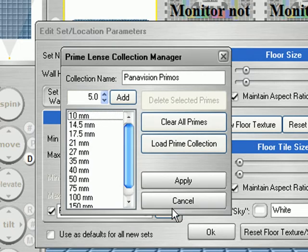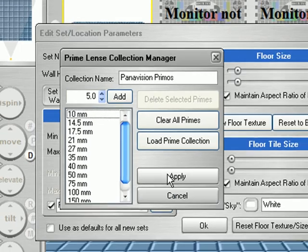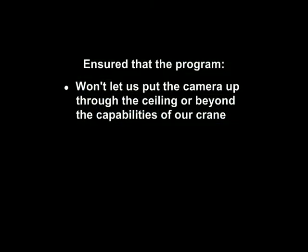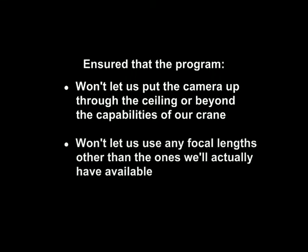We can select from any of the standard lens collections or edit and build our own. Once we're satisfied, simply click Apply. What we've just done has ensured that the program won't let us put the camera up through the ceiling or beyond the capacities of our crane, and won't let us use any focal lengths other than the ones we'll actually have available. With all that under our belt, we're ready to build the set using a function called, appropriately enough, Room Builder.